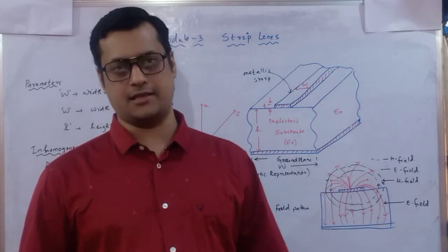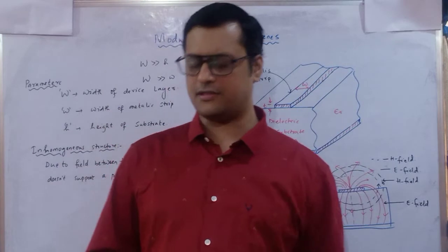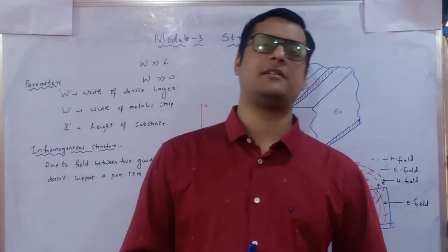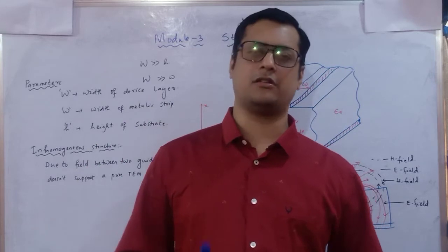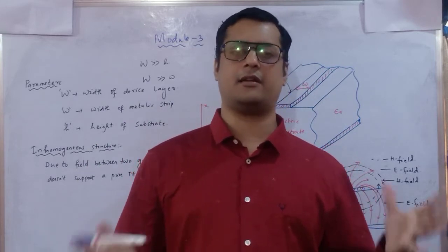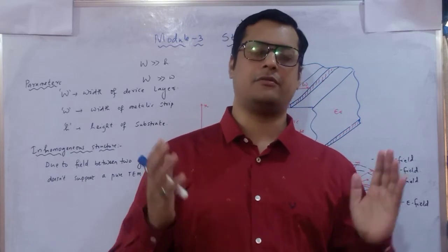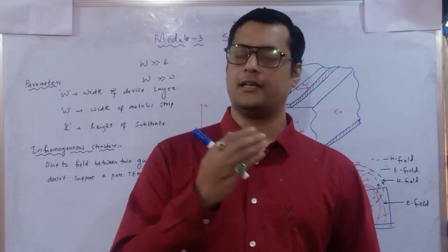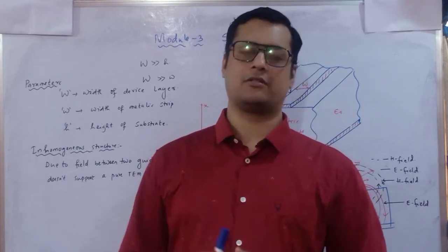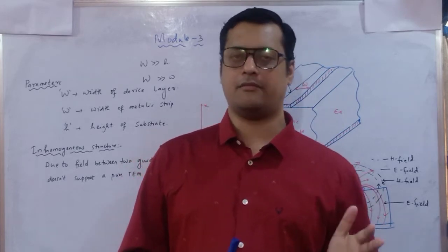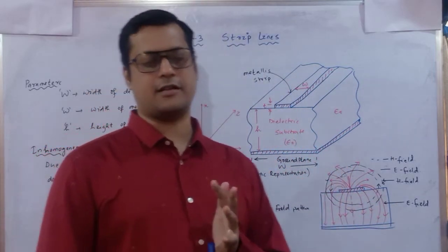This transmission line can transmit as well as receive signals. Transmission lines operate in TEM mode — transverse electromagnetic mode — where both electric and magnetic fields help deliver information. However, the same characteristics are not followed by the microstrip line.